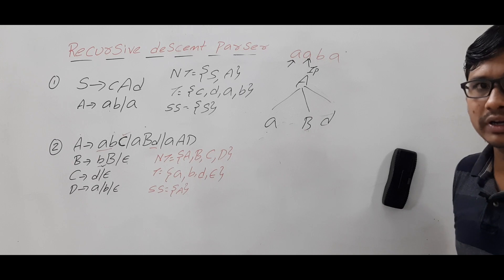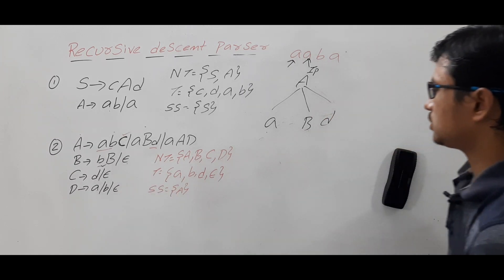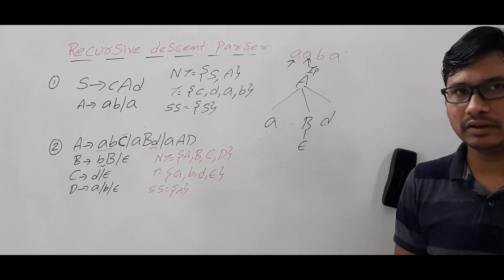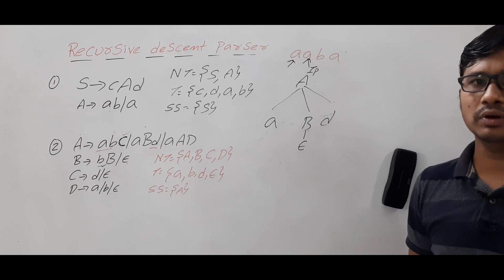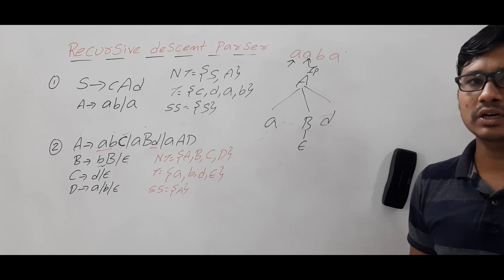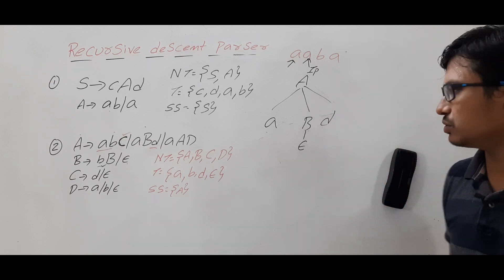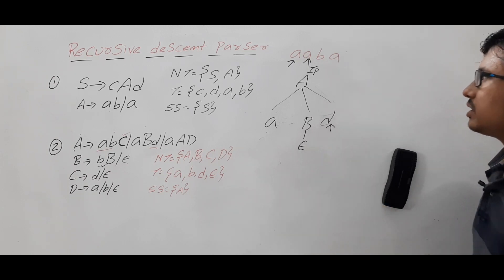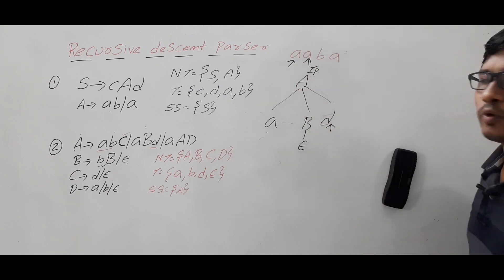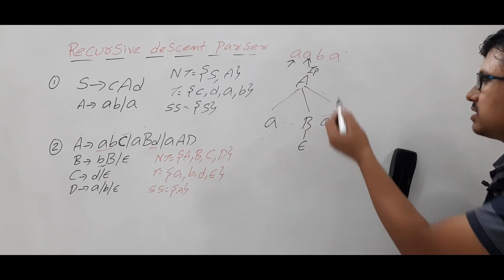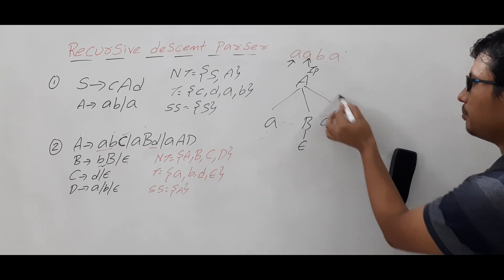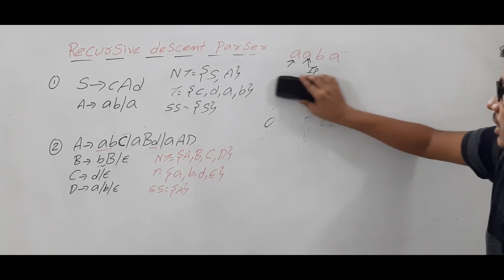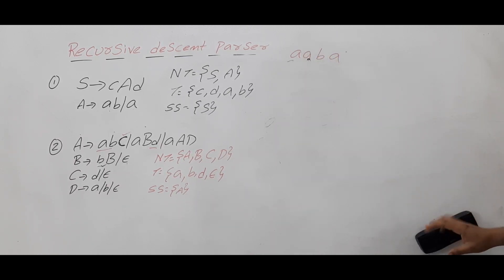After backtracking, it is back at B. It takes the next production for B, which is epsilon. Epsilon has string length zero, so nothing needs to be matched. The descent pointer now moves to D. The descent pointer is pointing to D and the input pointer is pointing to 'a' — there is a mismatch, so it does backtracking again.